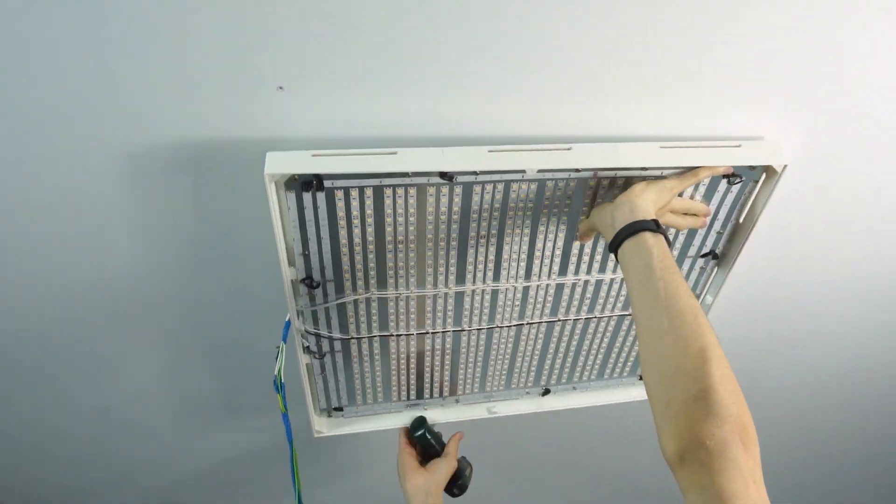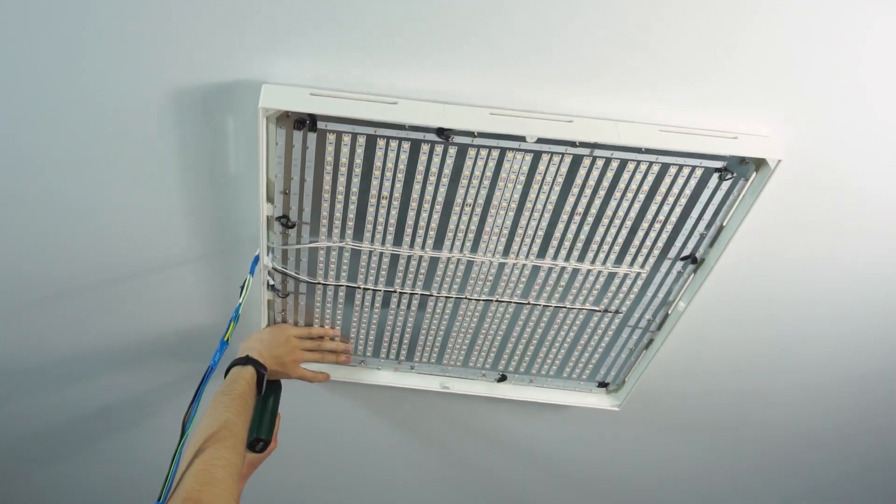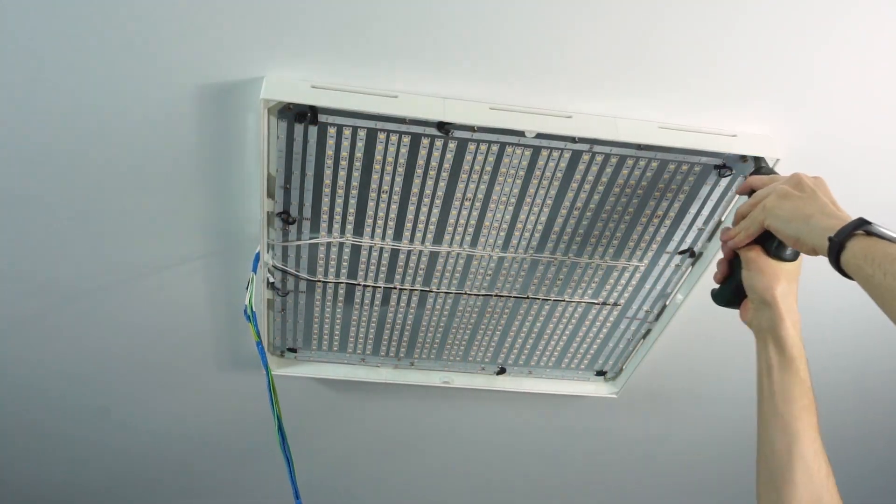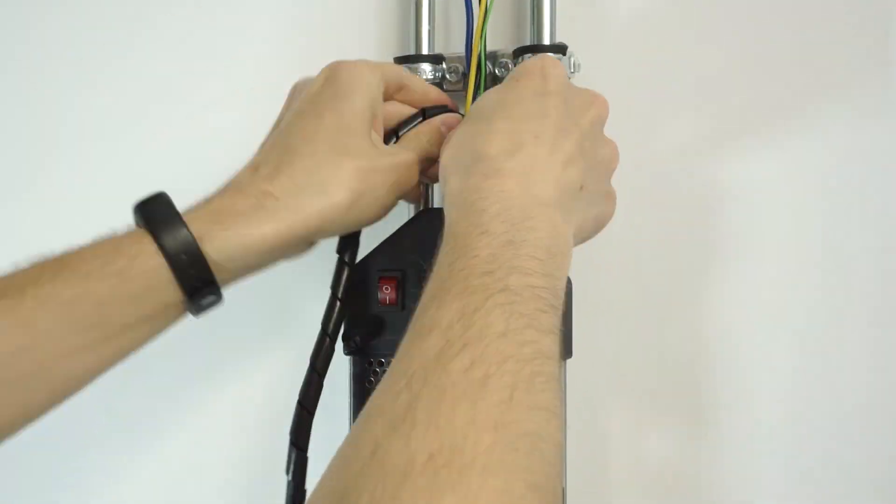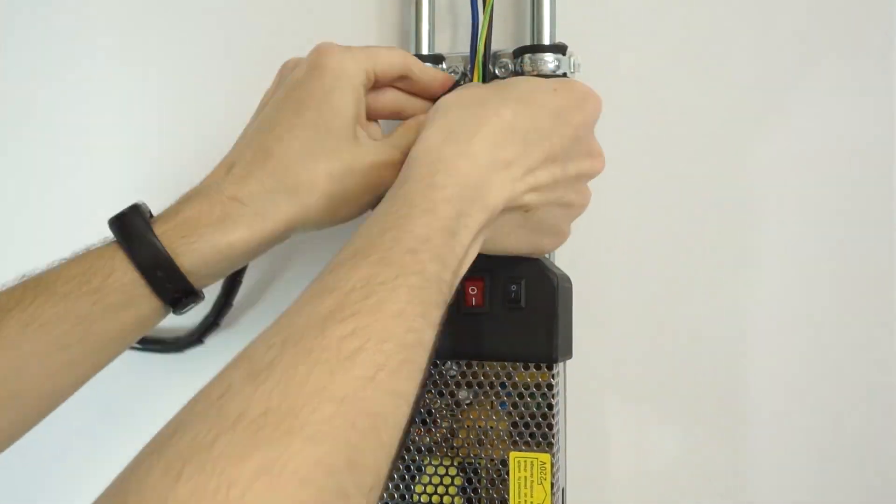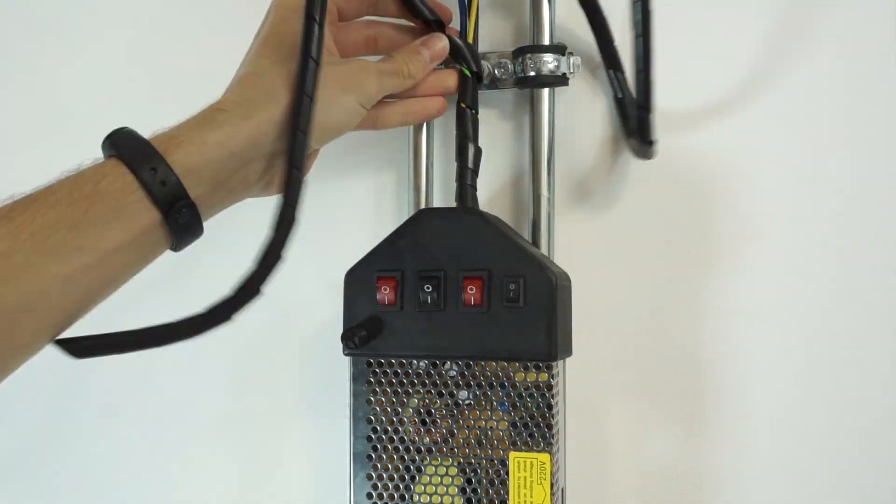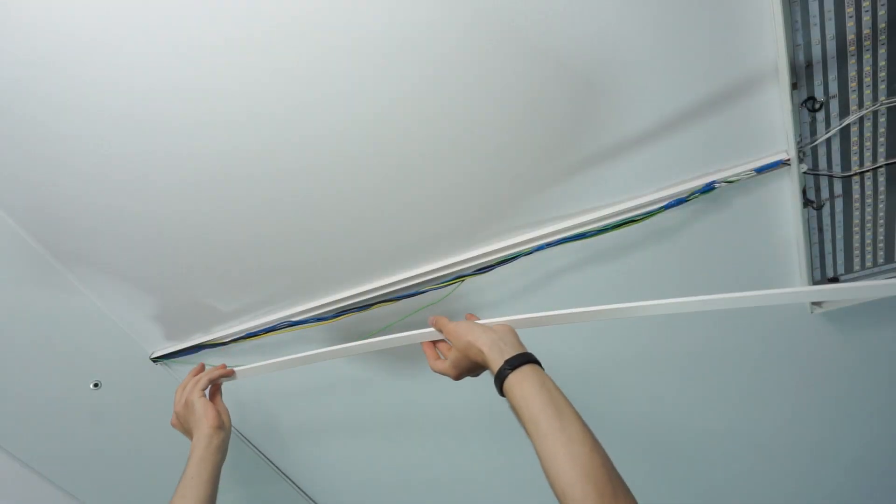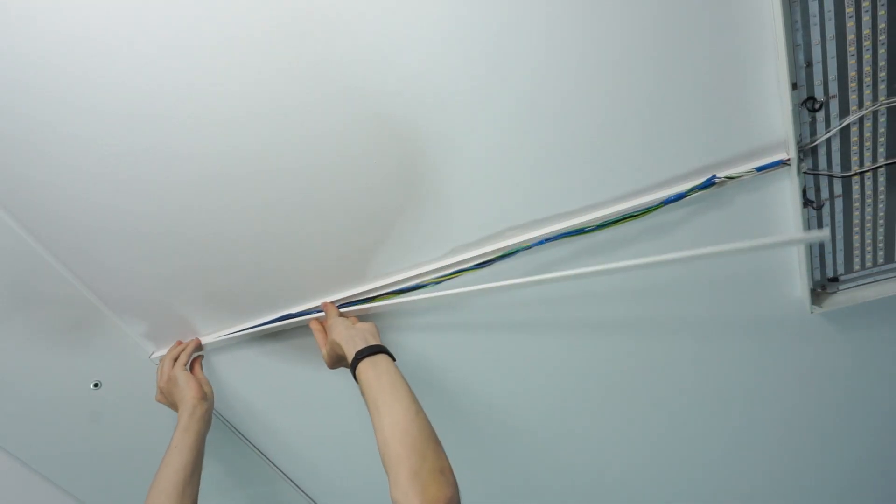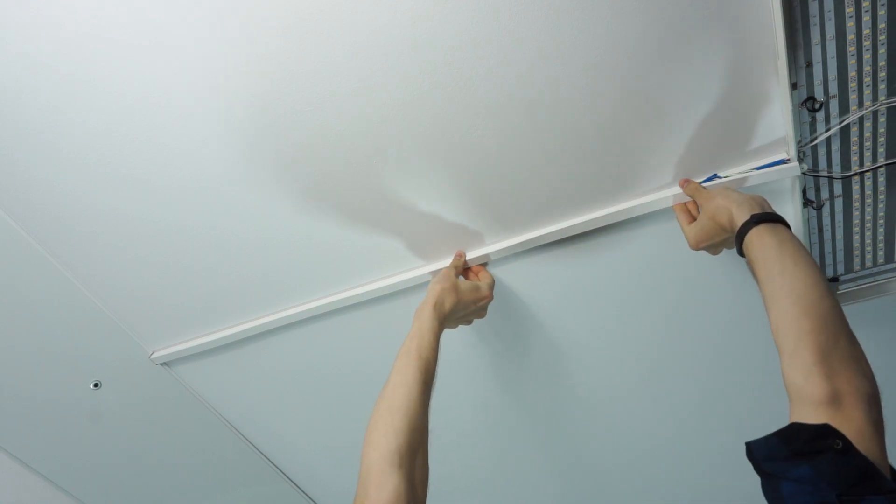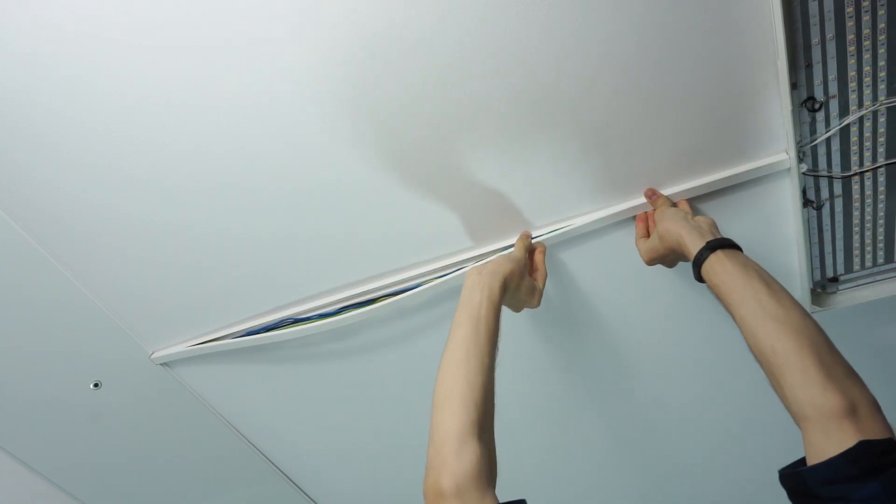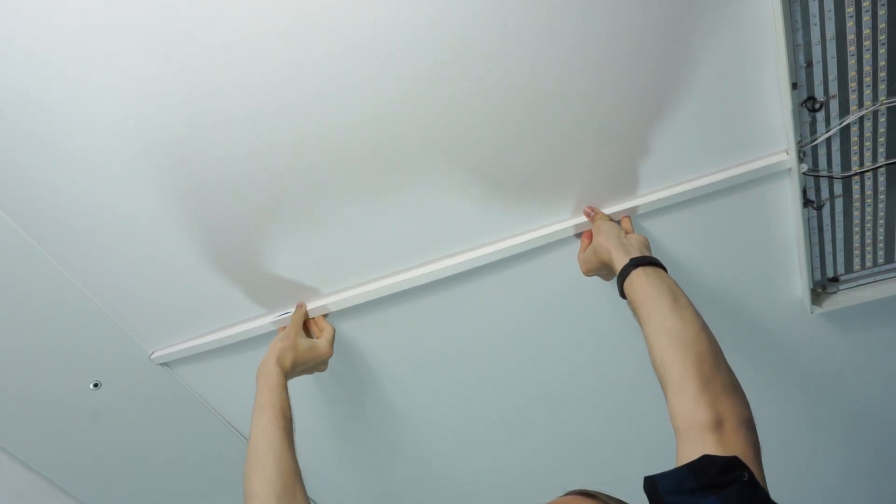Next I mounted the panel to the ceiling, mounted the power unit to the wall, and secured all the wires. However, keep in mind that the wires should be pretty thick, because otherwise you'll experience significant voltage drops and hence less light.